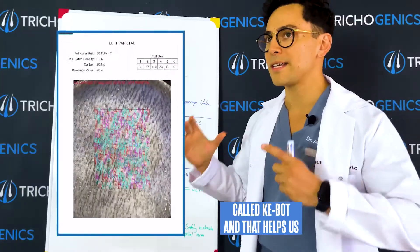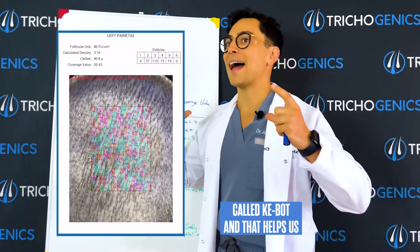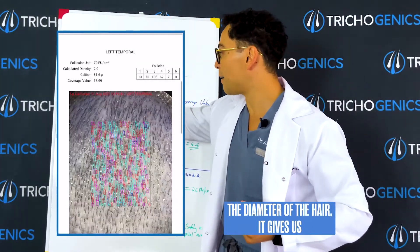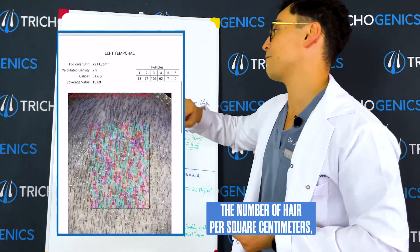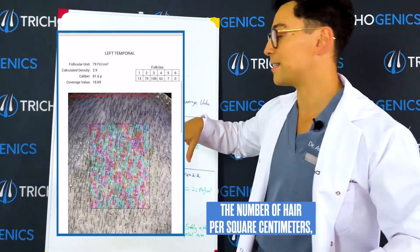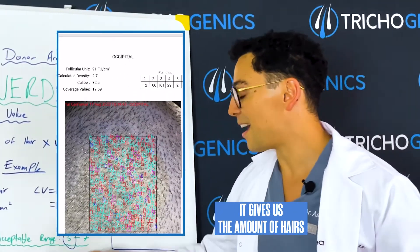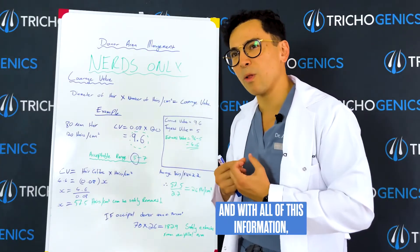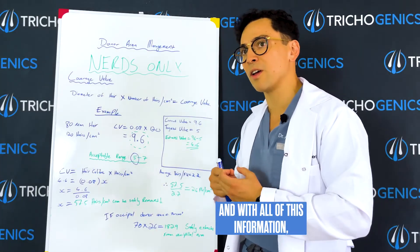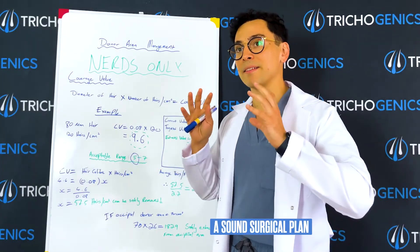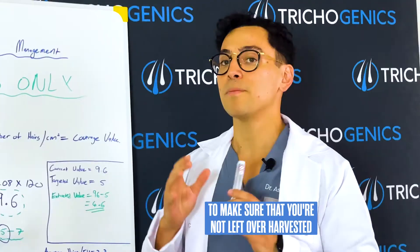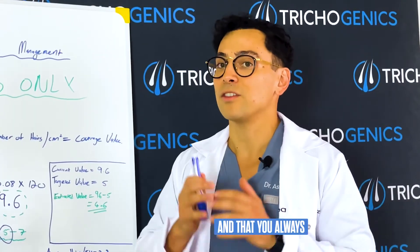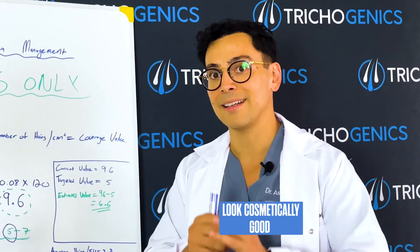We use a little device called a KeyBot, and that helps us estimate all these values. It gives us the diameter of the hair, the number of hairs per square centimeter, and the amount of hairs per follicle as well. With all this information, we can really make a sound surgical plan to make sure that you're not over-harvested and that you'll always look cosmetically good.